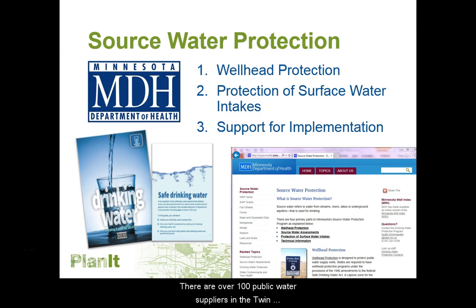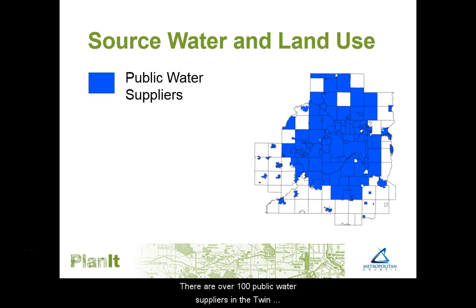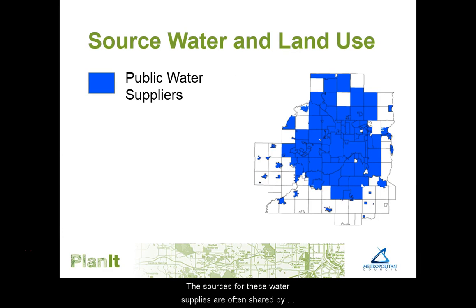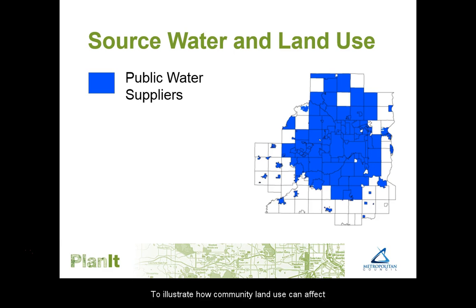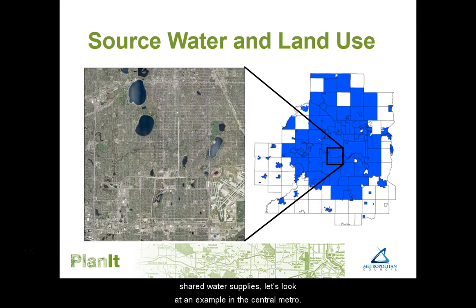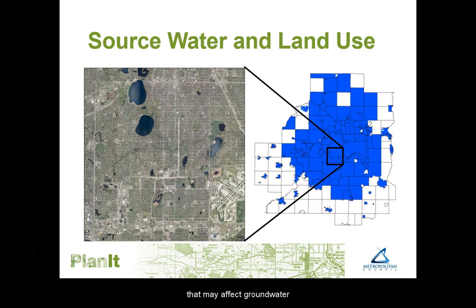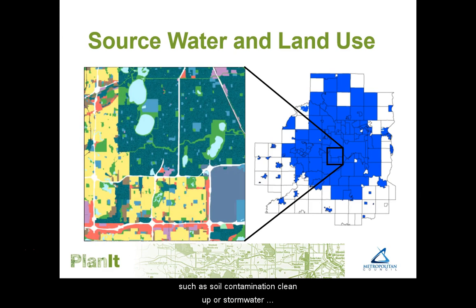There are over 100 public water suppliers in the Twin Cities metropolitan area. The sources for these water supplies are often shared by more than one community. To illustrate how community land use can affect shared water supplies, let's look at an example in the Central Metro. This part of the metro has a variety of land uses that may affect groundwater, such as soil contamination cleanup or stormwater treatment and infiltration.